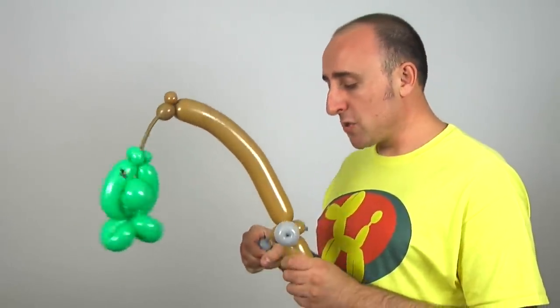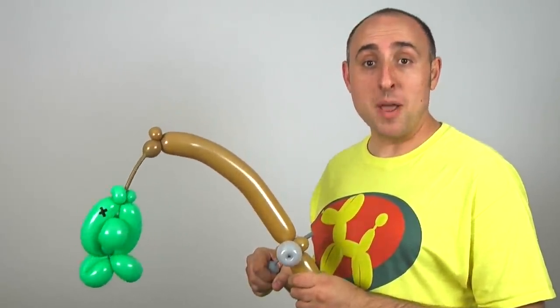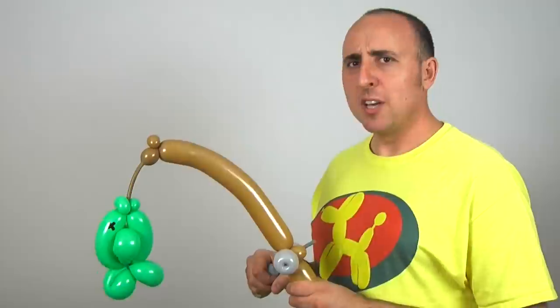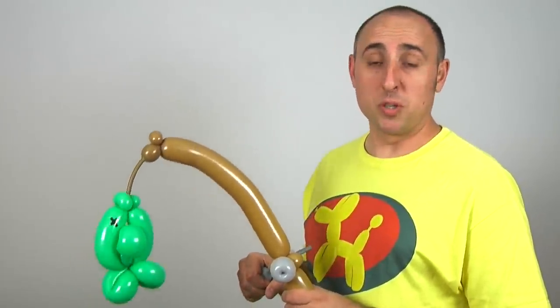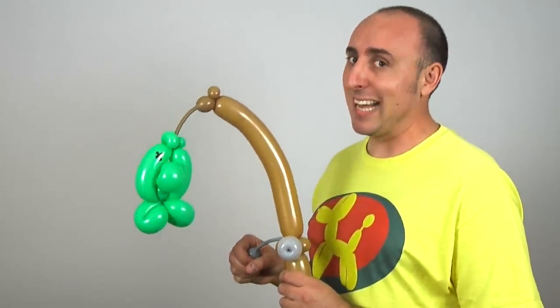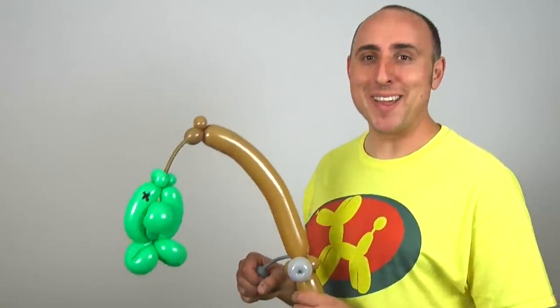It's a really simple design, and this is one of those things that everybody will ask you to make once they know you know how to make balloon animals. Sort of like a sword or a flower or a poodle. Balloon fish on a fishing pole? Classic balloon animals. Let me show you how to make it.